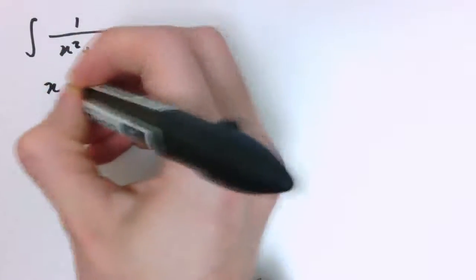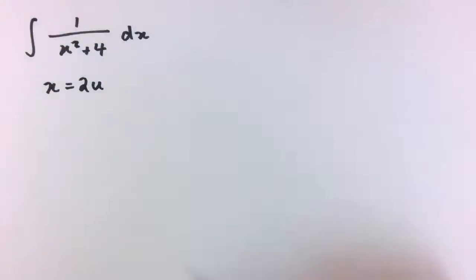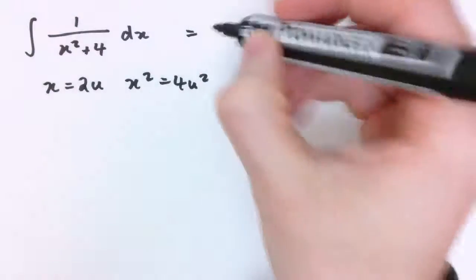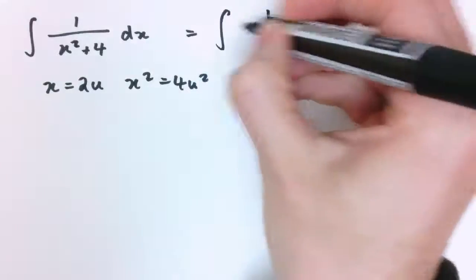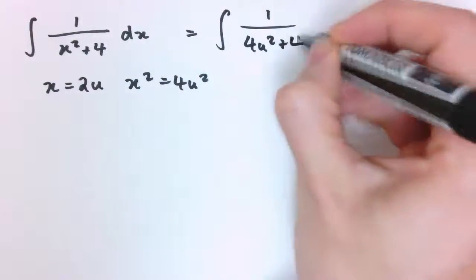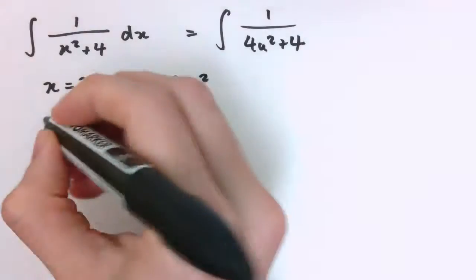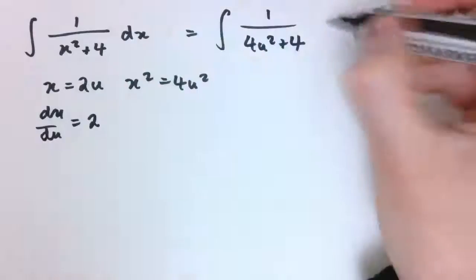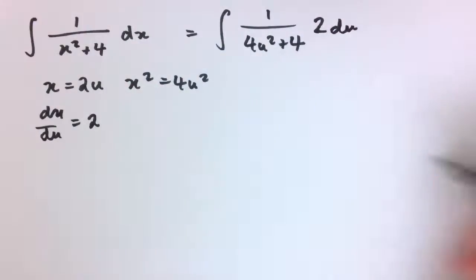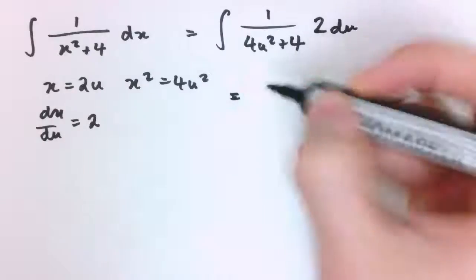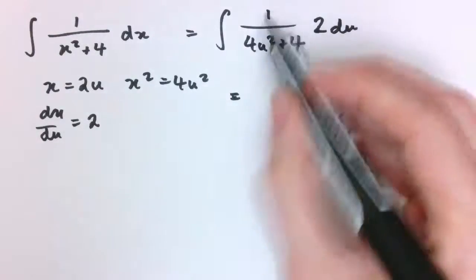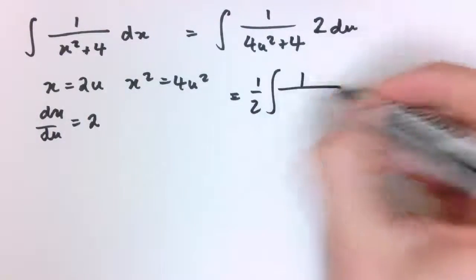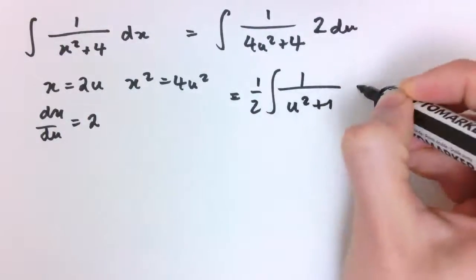If you make the substitution x equals 2u, then we see that x squared is 4u squared, so this integral becomes 1 divided by 4u squared plus 4, and we have dx by du equals 2, so I can swap dx with 2 times du, and that gives me that this is equal to, well I've got a factor of 4 on the bottom here, but also 2, so I can pull out overall a factor of a half, times u squared plus 1 du.